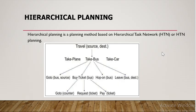Consider this example for hierarchical planning: travel from one source to another destination. Here, I am planning to go from Chennai to Richie. So my source is Chennai and my destination is Richie. After planning to travel, the next thing to decide is how we are going to travel.